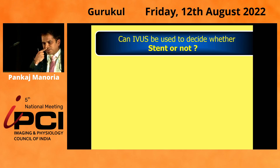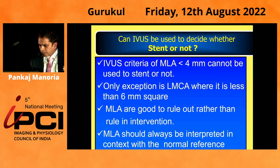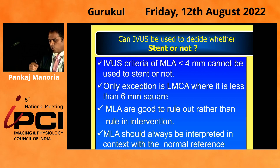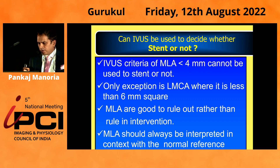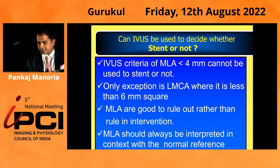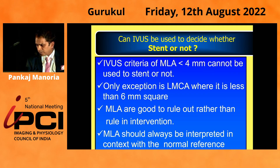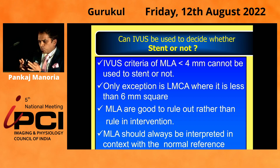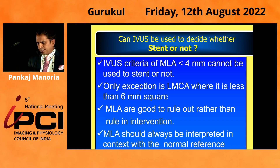Can we use IVUS to decide whether to stent or not? An IVUS MLA criteria of less than 4 mm² cannot be used to stent or defer. The only exception is the left main — LMCA — where if it is less than 6 mm², we say it is significant. So MLAs are good to rule out rather than rule in interventions, and MLA should always be interpreted in context with the normal reference segment.